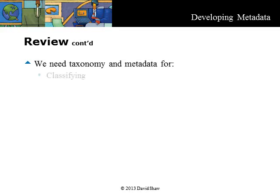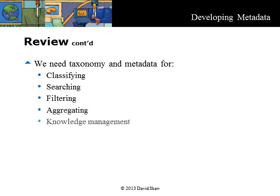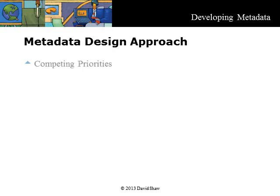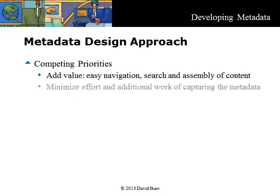We also discussed the need to classify information to manage our always growing body of knowledge. We need metadata to classify and find information, refine searches, find sets of information, and for knowledge management. The design of metadata balances two competing priorities: adding value to the content to allow easy navigation, search, and assembly of content into information products, and minimizing the effort and additional work of capturing the metadata.